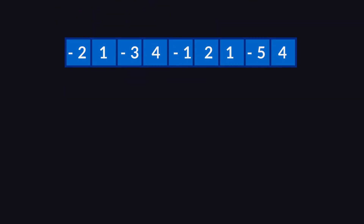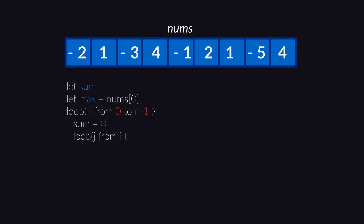Let's call this array nums. Let's take two variables, sum and max, and initialize max with the first element of the array. We run the loop from 0 to n minus 1, where n is the total number of elements in the array. We assign 0 to sum and run another loop from i to n minus 1. We add elements one by one to sum and check if sum is greater than max. If it is, then we change the value of max to sum.